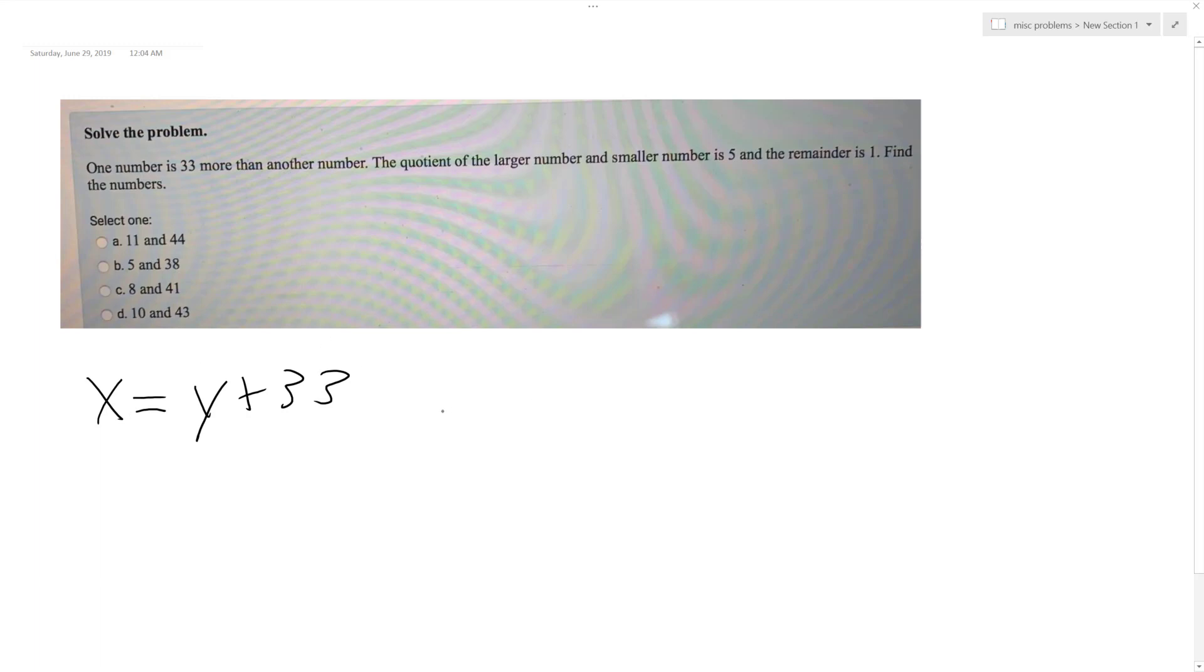So the quotient, this is two equations, two unknowns, so the quotient of the larger number divided by the smaller number is 5 and the remainder is 1, so 1 over, plus 1 over y.